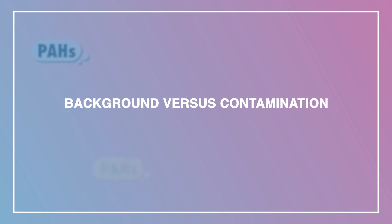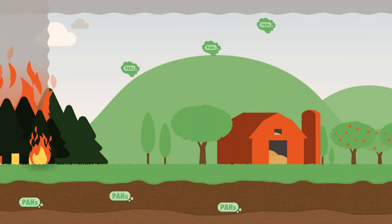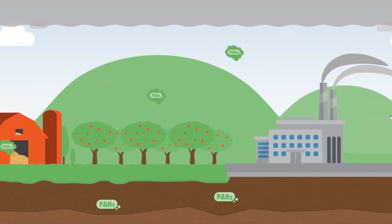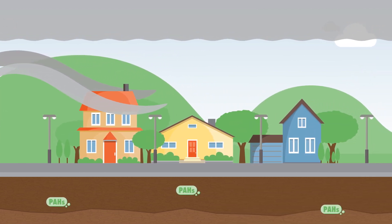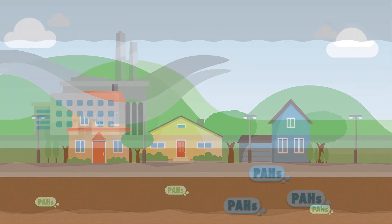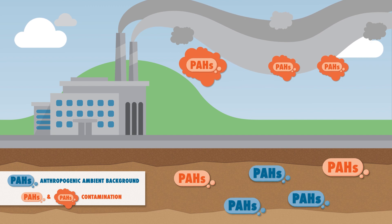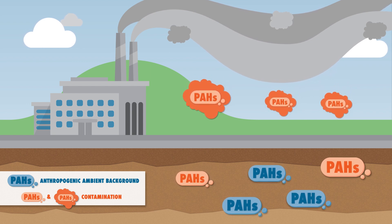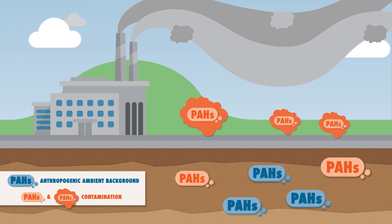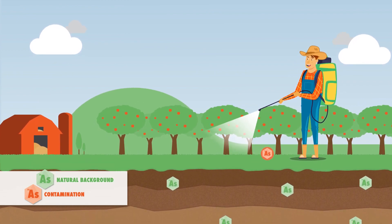Now let's talk about how to differentiate between natural background and contamination. PAHs released from non-anthropogenic sources like forest fires can be transported long distances and deposited onto and remain persistent in the soil — PAHs released from forest fires are considered natural background. PAH contamination coming from anthropogenic ambient background is represented by the blue icons. This graphic shows how PAH contamination in soil can be mixed with PAHs from anthropogenic ambient sources, as shown by the orange icons.